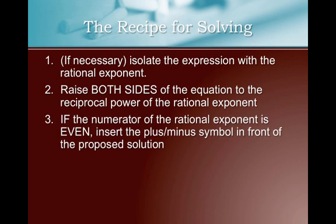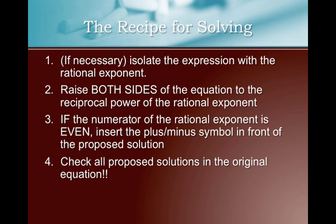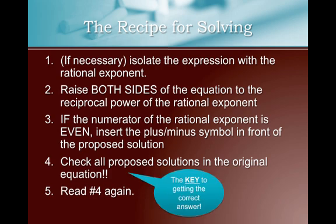Step three: be careful — if the numerator of the rational exponent is even, you must insert the plus-minus symbol in front of the proposed solution. Why? If the numerator is even, then when flipped it becomes the denominator, meaning the root is even in our answer. Just like with quadratic equations when we square-rooted both sides, we always had to add the plus-minus. Step four: check all proposed solutions in the original equation. The key to getting the correct answer is checking all proposed solutions.